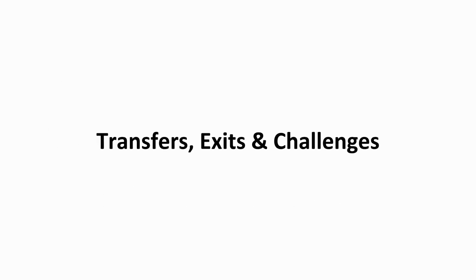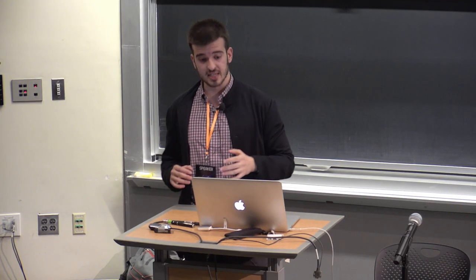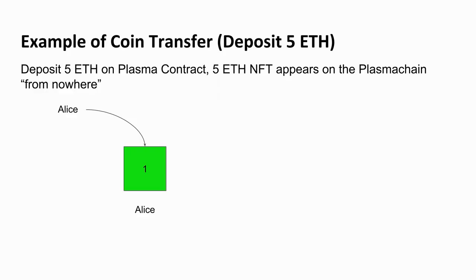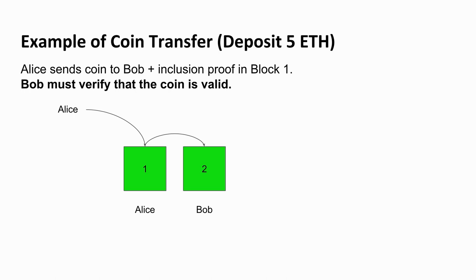I'll go over the basic transaction format and how exits and challenges work with an example. Let's say I have five Ether on the Plasma contract, so literally five Ether in my account. I go to the Plasma contract and deposit. I get a five Ether NFT — a coin with a serial number on the Plasma chain. When I want to transfer it to Bob, I send Bob my coin plus an inclusion proof at block one. Bob checks that it was included in block one and block two after the operator has committed the Merkle block root to the parent chain.